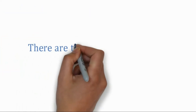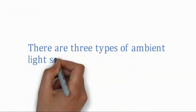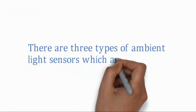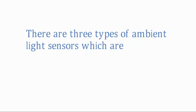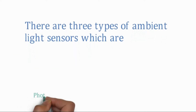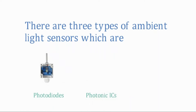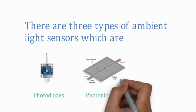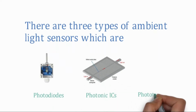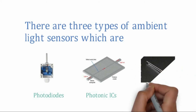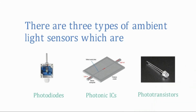There are three types of ambient light sensors: Photodiodes, Photonic ICs, and Phototransistors, which combine a photodetector and an amplifier in one device.